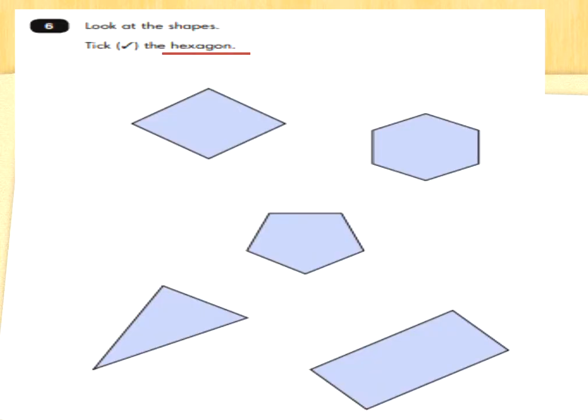Look at the shapes — tick the hexagon. A hexagon has six sides. Think about the name 'hex' and the number six — that's how Mrs Gillette remembers. Pause the video if you need to count the sides. I'm going to count the sides from the top: one, two, three, four — not that one. Middle one: one, two, three, four, five — not that one. Top right: one, two, three, four, five, six. I found the hexagon — did you find it? Well done if you did.